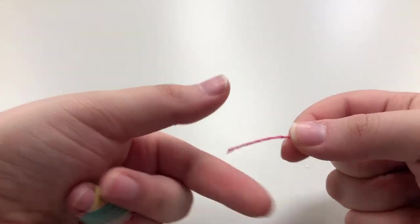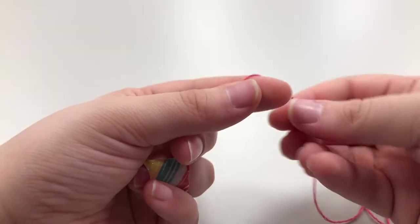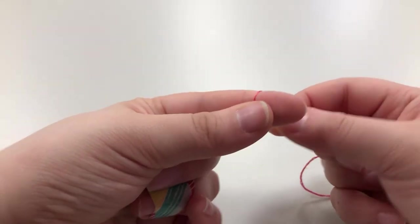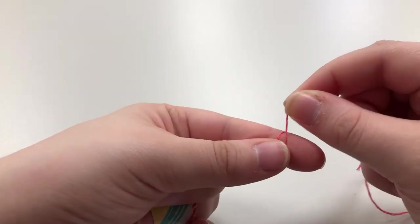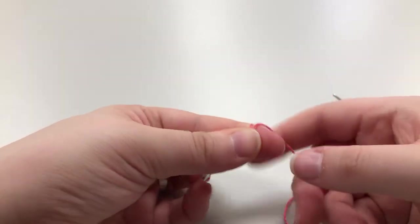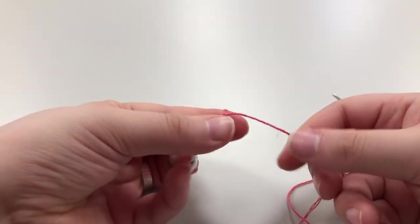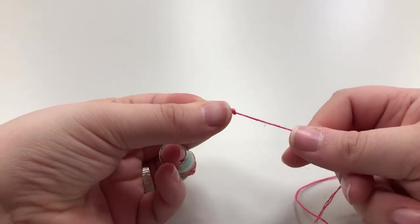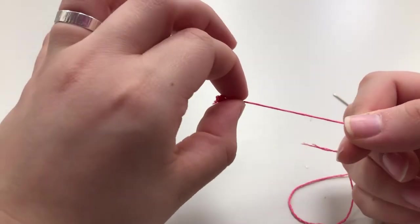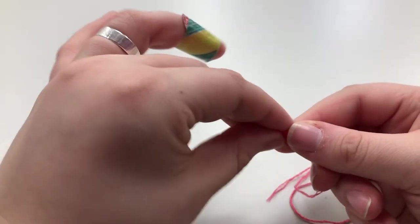So in terms of making a knot at the end of your thread, which is kind of how the thread stays in place while you're sewing, I recommend taking two fingers. You'll take the thread and wrap it around your finger once, wrap it around your finger twice, and then using your thumb, you're going to roll it off your finger and then you're going to pull that rolled bit tight and now you have a knot at the end of your string.